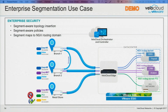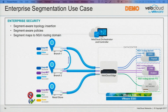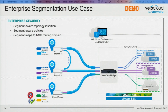You want to separate a PCI segment from the rest of the network. With VeloCloud segmentation, we are not only virtually segmenting and isolating different networks, but more importantly, we are bringing all the rich features of SD-WAN to the segment level. First: segment-aware topology insertion.